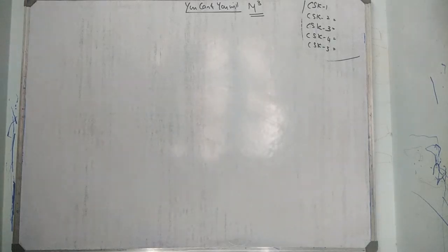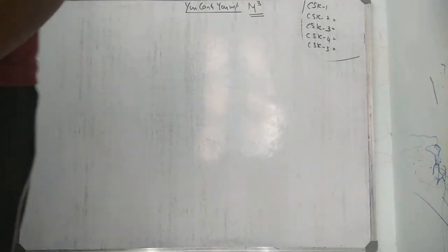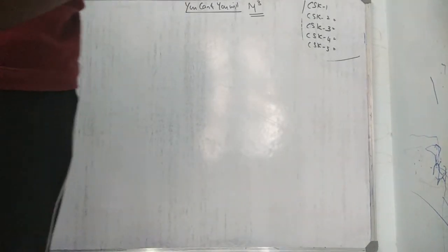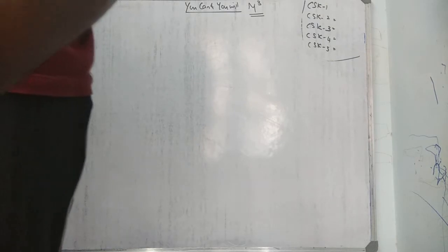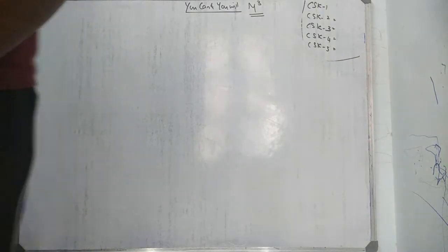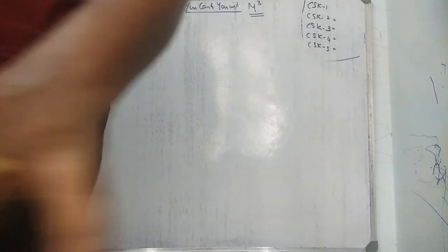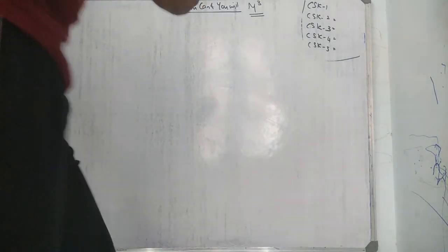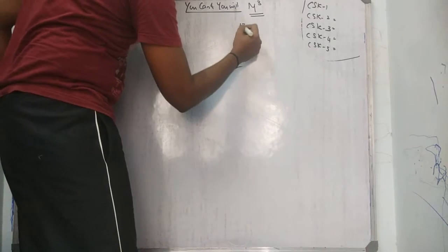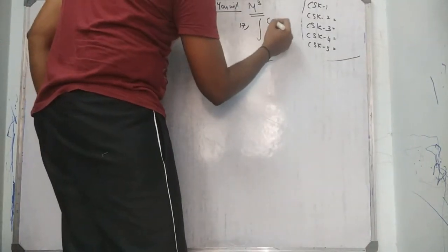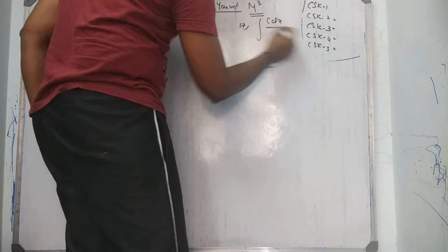Good morning. Let's do Exercise 7.5 question number 17. I already completed questions 17, 18, 19 using the same method, then 20 is quite different and 21 is easy. So my target is question number 17. I'll give a small hint: numerator is cos x, denominator is cos x.